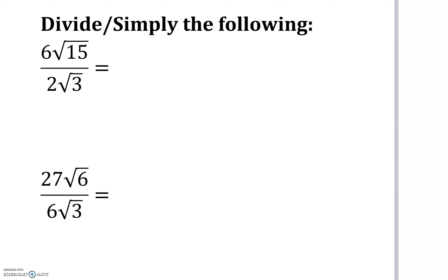First of all, we can simplify the coefficients here and here. You can think of this as if you had coefficients in front of an x, or x and y, because really those are different radicals. You can simplify this by dividing by two on the top and dividing by two on the bottom. That gives us three and one on the bottom.